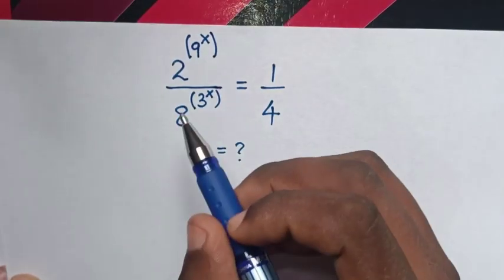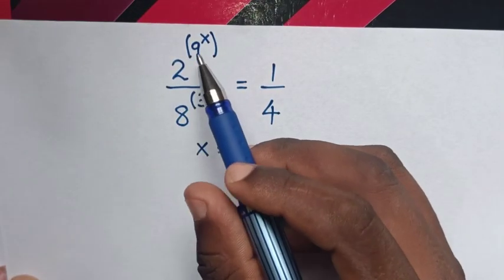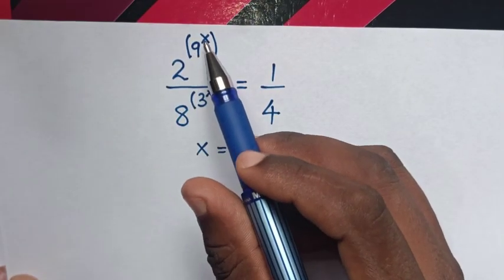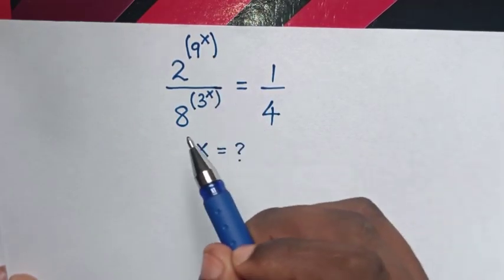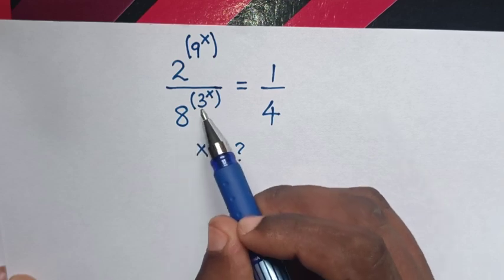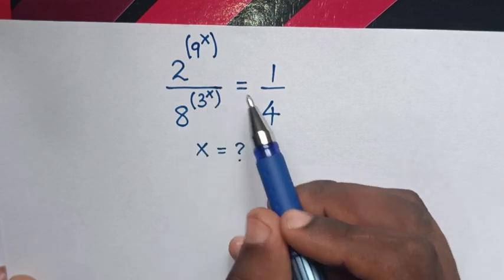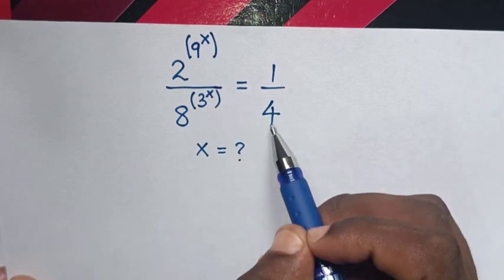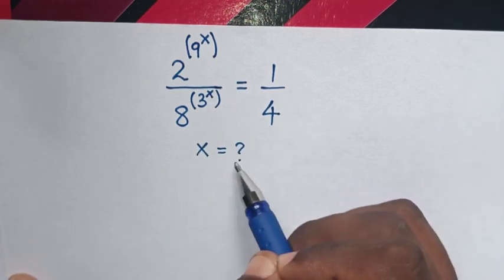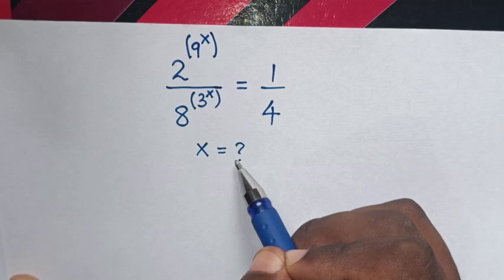Hello! How to solve 2 to the power of 9^x, in bracket, over 8 to the power of 3^x, in bracket, is equal to 1 over 4, to find the value of x.